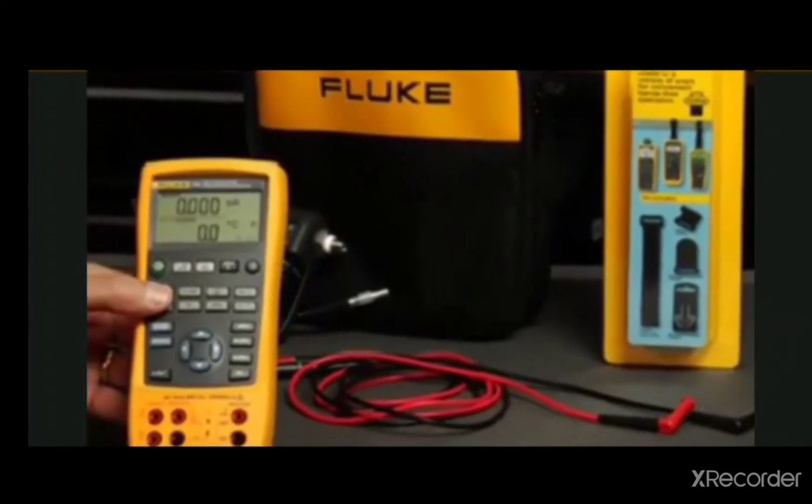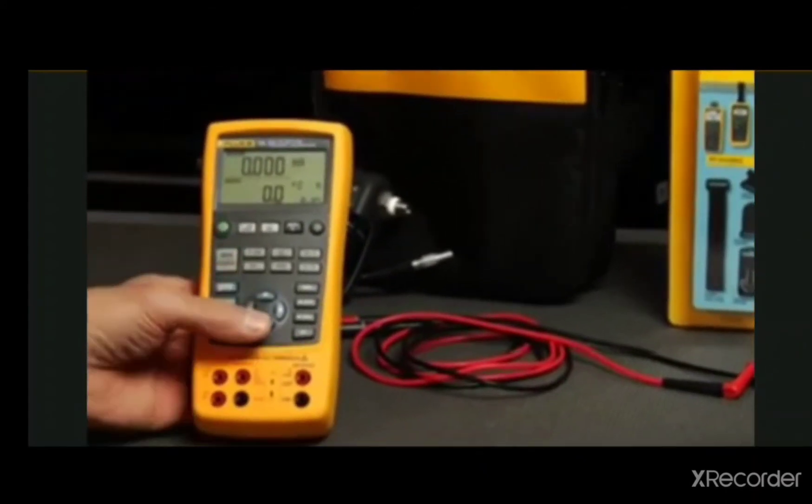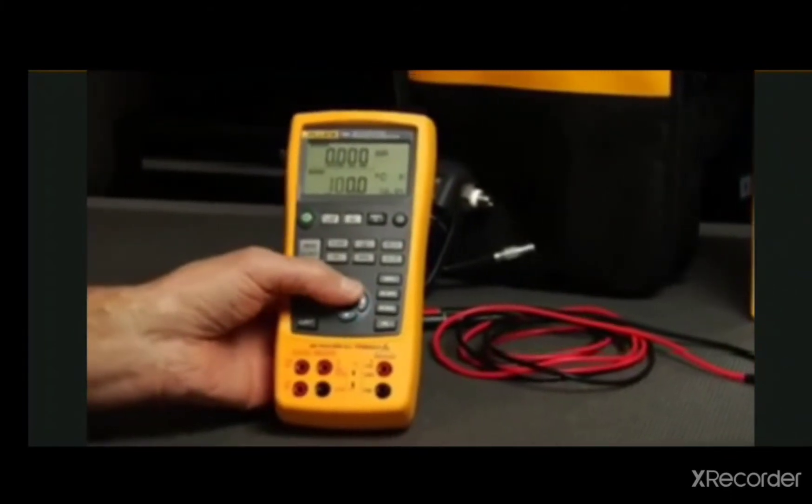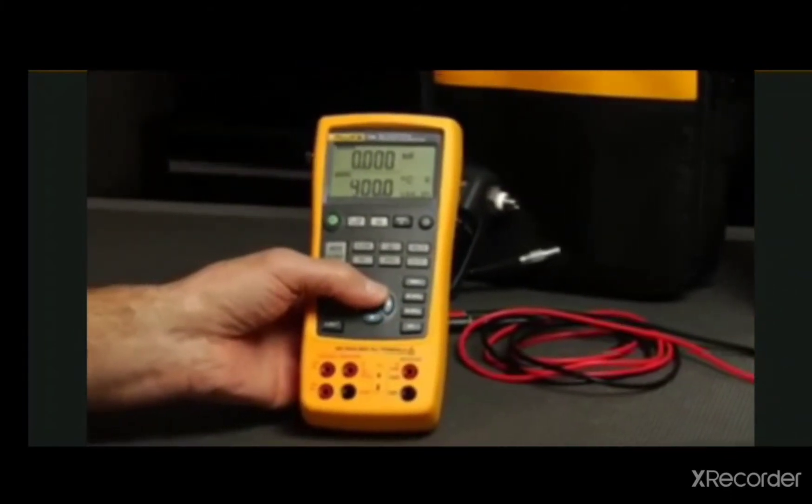Hi, I'm Jim Shields, and today we're going to take a look at the Fluke 725 multifunction process calibrator. The Fluke 725 is a great balance of power and simplicity. You can test and calibrate almost any process parameter without getting bogged down in complicated menus.